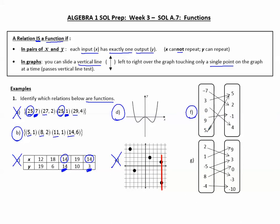How do I know these are x values? Because x is the input, and the input goes first. The y is the output — what we get after. In this one, I notice that negative 5 is going to two different y values: negative 5 goes to 3, and negative 5 goes to negative 3. Therefore, G is not a function.